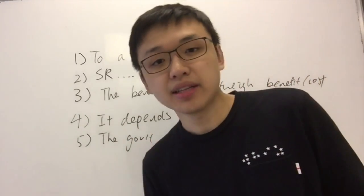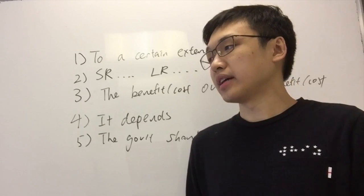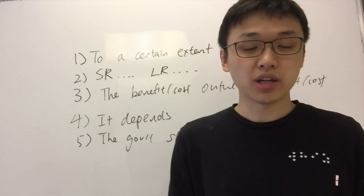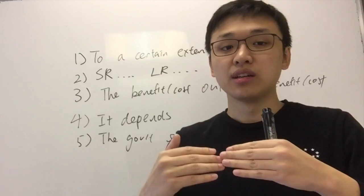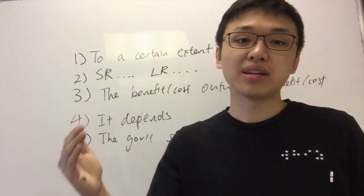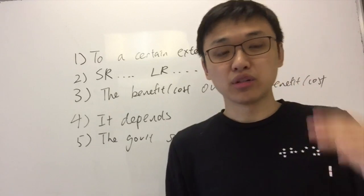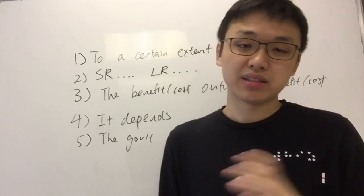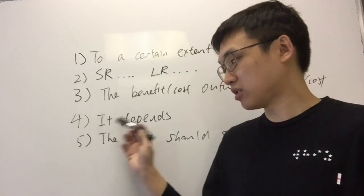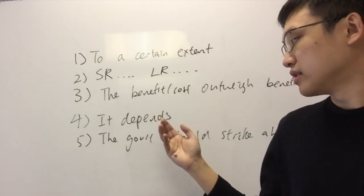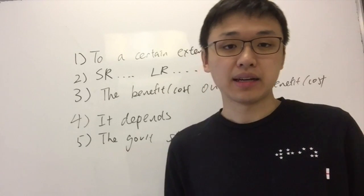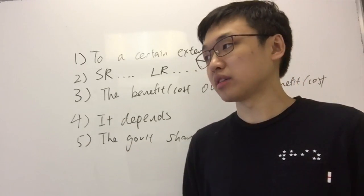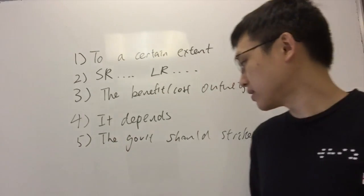The 'it depends' approach for monetary policy: you can say the effectiveness of monetary policy depends on consumer and business confidence. If business confidence is very high, a higher interest rate will have very little negative effect on aggregate demand. But if consumer confidence is low and consumers are already geared towards spending less, then increasing the interest rate will be effective in bringing down aggregate demand. Again, it is better not to use 'it depends' for your IA since they already give you real facts; but for paper one, you can definitely use it.